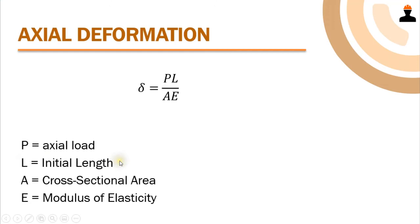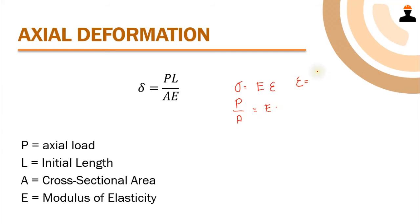Using Hooke's Law, the stress is equal to E, the modulus of elasticity, times the strain. We know that stress is equal to force over area, and the normal strain is equal to the deformation over the original length. Therefore, we can derive that the deformation equals PL over AE.